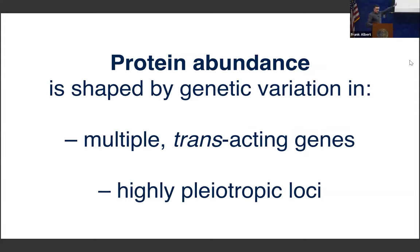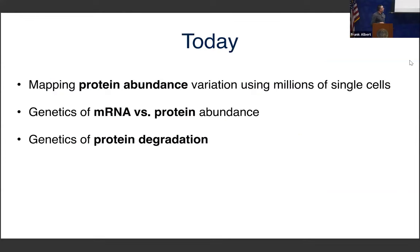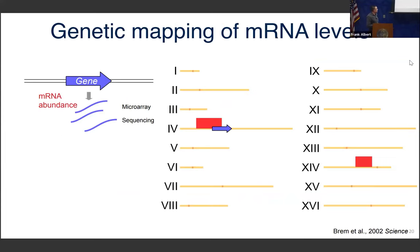So that was the summary of the first part — this is how we've been looking at protein abundance. Our results show great complexity in how individual proteins are affected genetically from variation all across the genome in trans, and we have these highly pleiotropic loci. Given that a lot of attention in the field has been on RNA, we were then interested in the specific relationship between RNA and protein abundance.